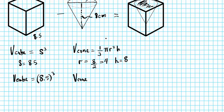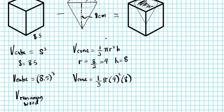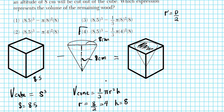The volume of this particular cone is one-third π times the radius squared — that's 4² — times the altitude, which is 8. So the volume of remaining wood is simply the difference: 8.5³ minus one-third π times 4² times 8. If you look at your options, the correct answer is option number 4.